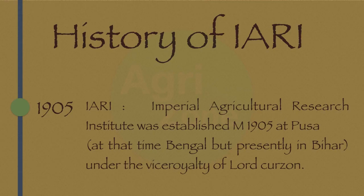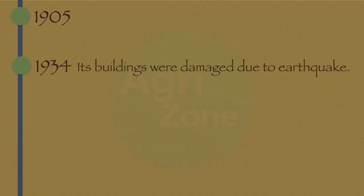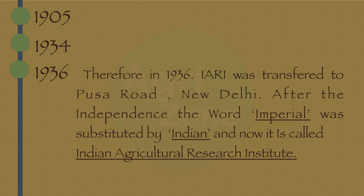In 1905, the Imperial Agricultural Research Institute was established at Pusa — at that time in Bengal, but presently in Bihar — under the viceroyalty of Lord Curzon. In 1934, its buildings were damaged due to an earthquake. Therefore, in 1936, the IARI was transferred to Pusa Road, New Delhi.